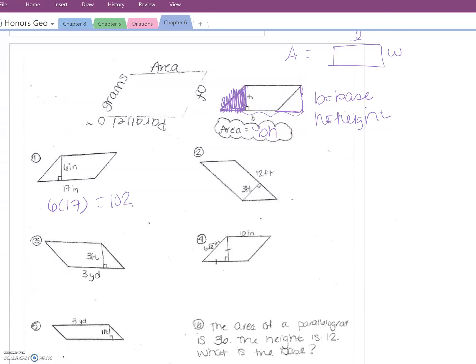A long time ago somebody said you have to put area in square units. Let's just talk very quickly about why. You're technically multiplying 6 inches times 17 inches, so 6 times 17 is 102, and inches times inches is inches squared. Number 12, just multiply 12 times 3. The area of this parallelogram is 36 feet squared.